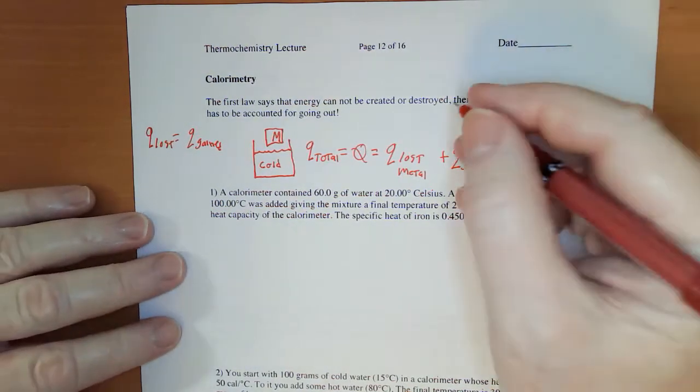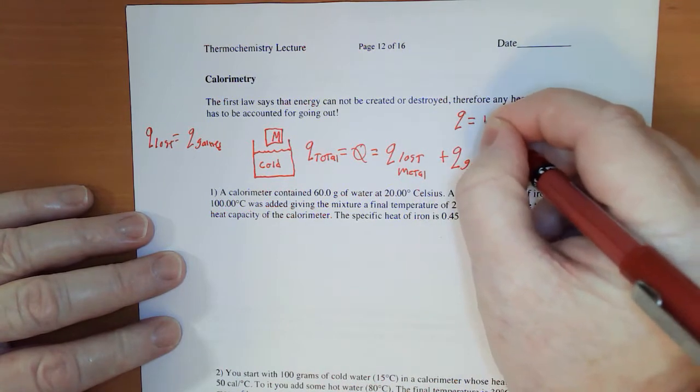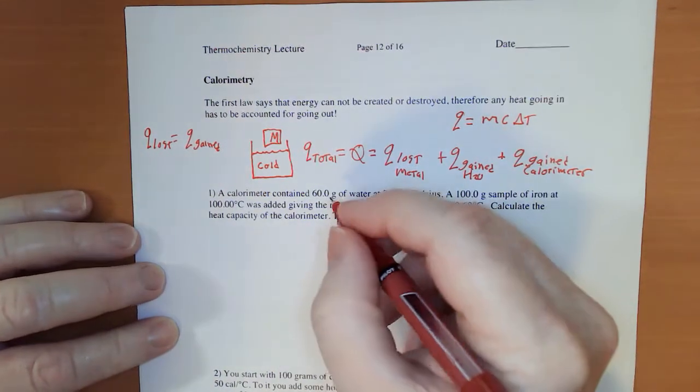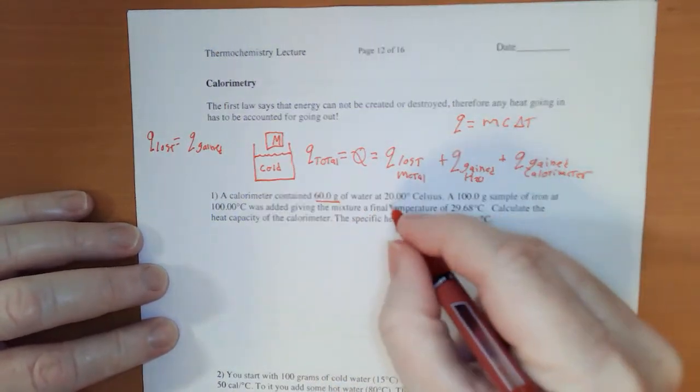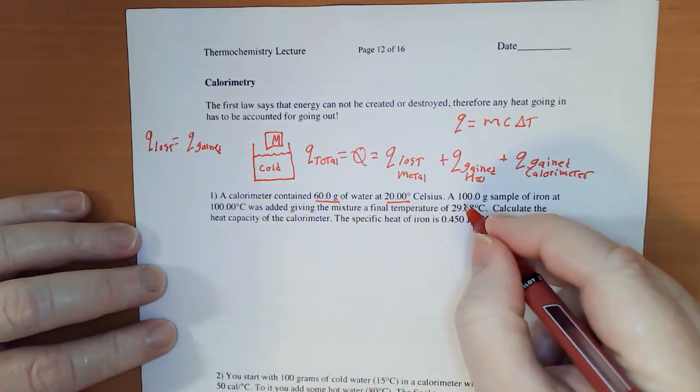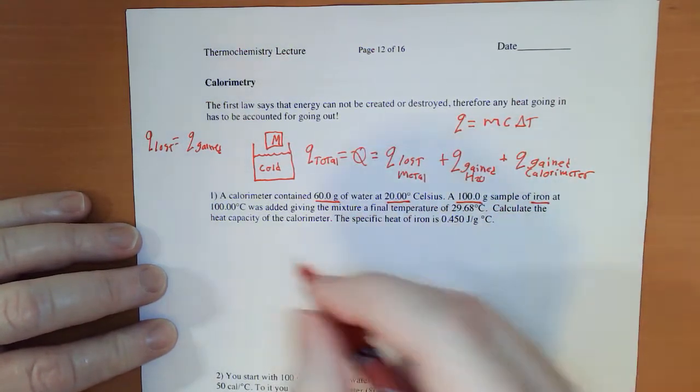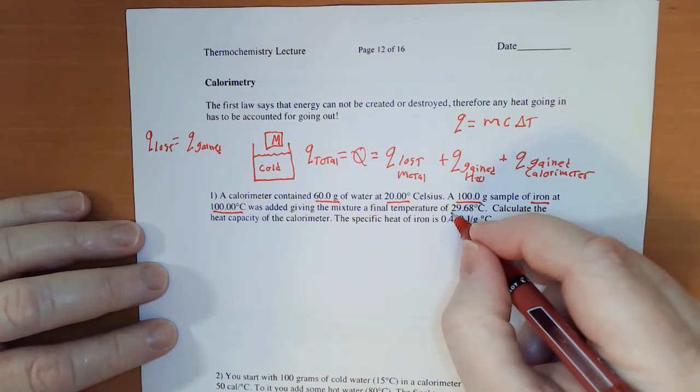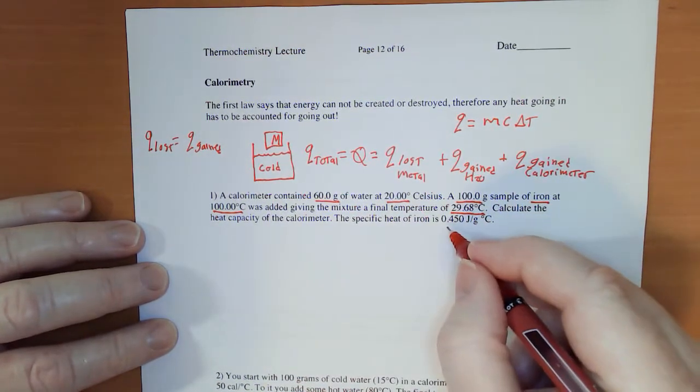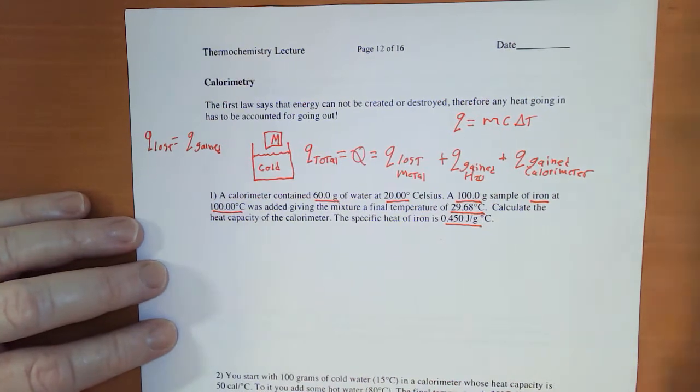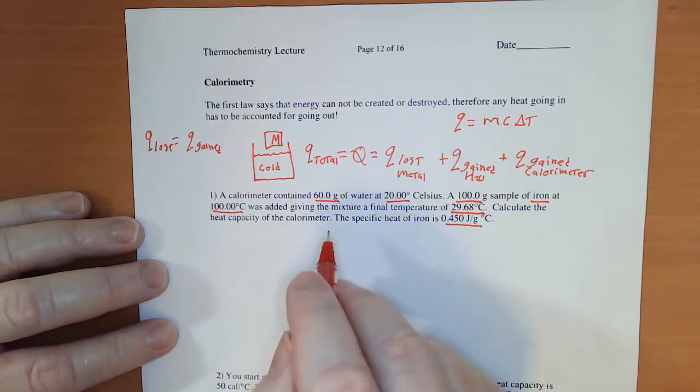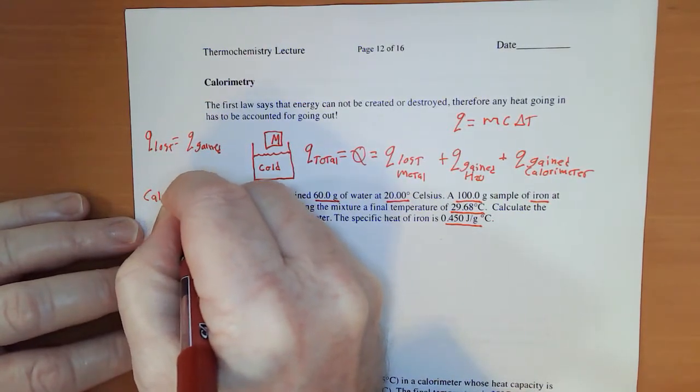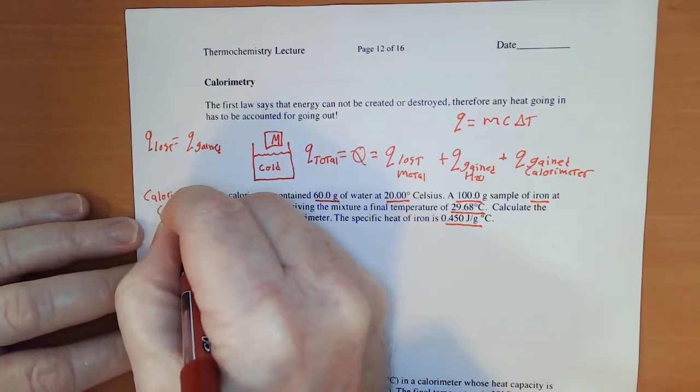Please remember that all of this relies on Q equaling mc delta t. So, I have a calorimeter with 60 grams of water that's at 20 degrees Celsius, and I take a 100 gram sample of iron which is at 100 degrees Celsius. Drop them together and my final temperature is 29.68 degrees Celsius. Calculate the heat capacity of the calorimeter. This is often called the calorimeter constant.